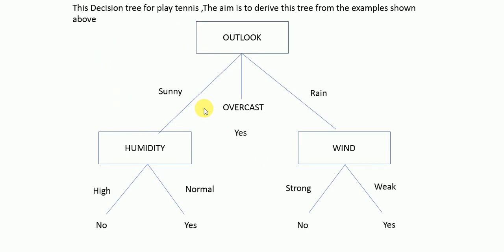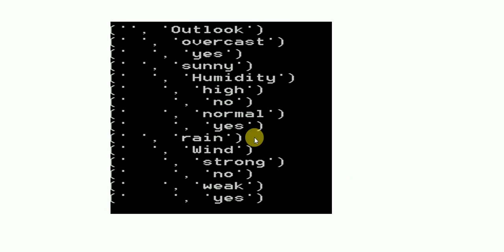The final output tree shows: outlook → sunny → humidity high → no, humidity normal → yes; outlook → overcast → yes (all values); outlook → rainy → wind strong → no, wind weak → yes. This is the final decision tree output.